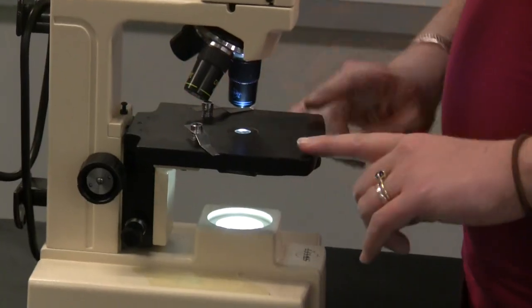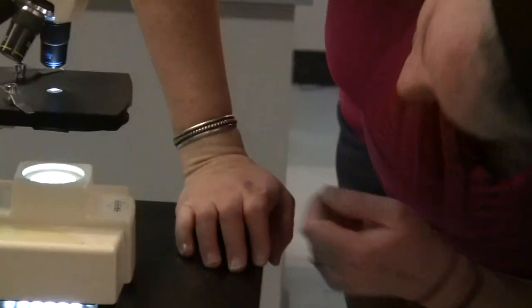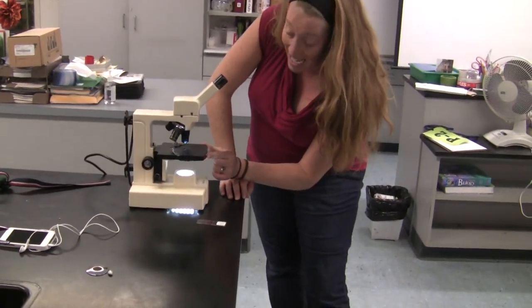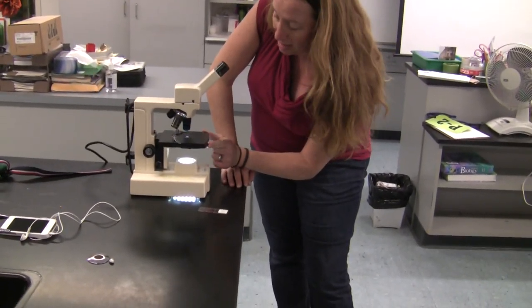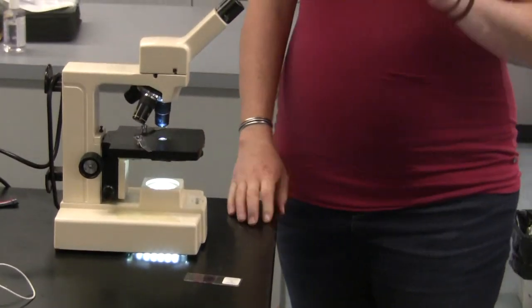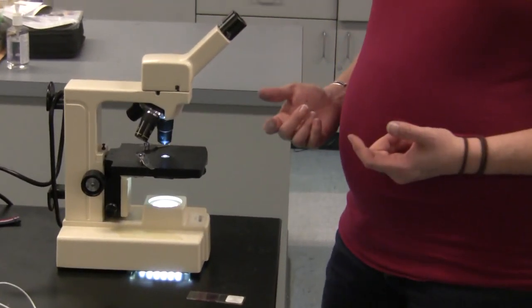Once you have it as far down as it can, you want to look under and there are little holes in the thing that's called the diaphragm. So you want to click the diaphragm over and make sure that you have the most light possible shining up through the stage.